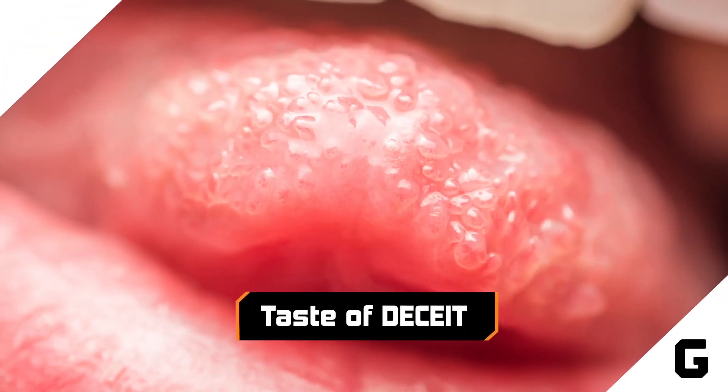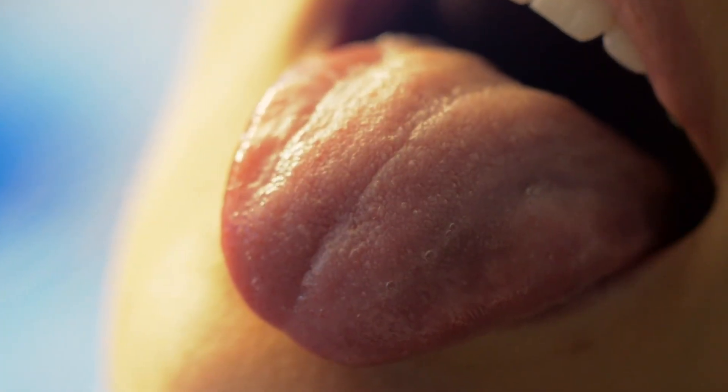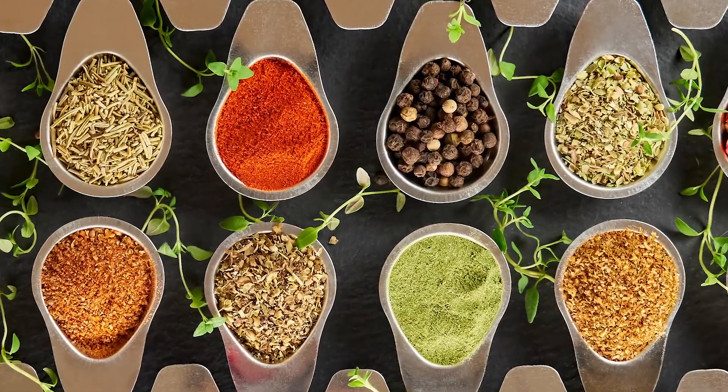Taste of deceit. Remember back in middle school when you were taught your taste buds were arranged in groups and you tasted different things — bitter, salty, sweet, and sour — in different areas of the tongue? If you were the kid who put a salty pretzel on the tip of your tongue and wondered why you could still taste saltiness, you were right to be skeptical.